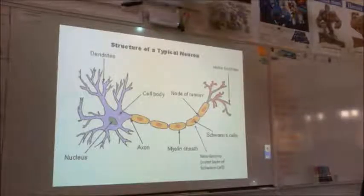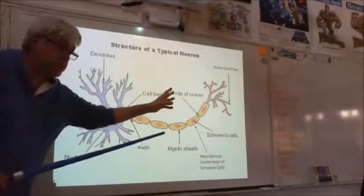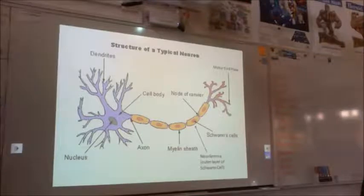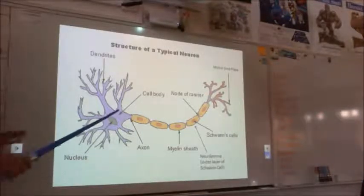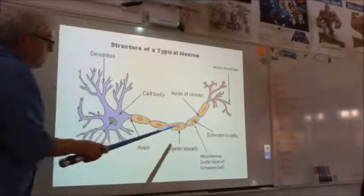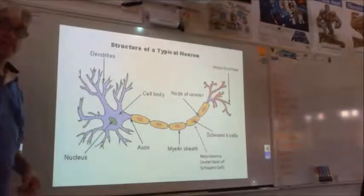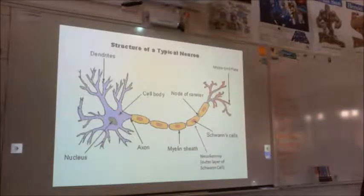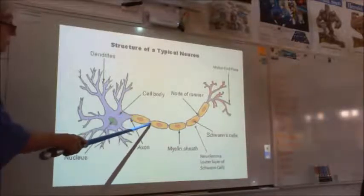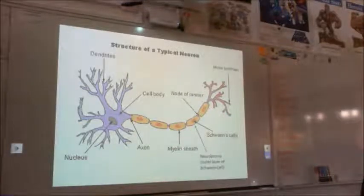Now, myelin sheaths are a fatty material, and they do two major jobs. They act as an insulator, because don't forget, you've got electricity flowing here. The other thing they do, is that they speed up how fast a reaction can occur. Now, if you have an unmyelinated neuron, which means you only have this axon part, the entire impulse has to travel through all of the axon. If you have a myelin sheath around it, what that enables the axon to do, is actually just for the electrical impulse to jump from one end of the cell, to the other end of the cell.